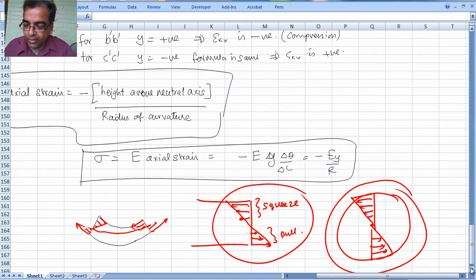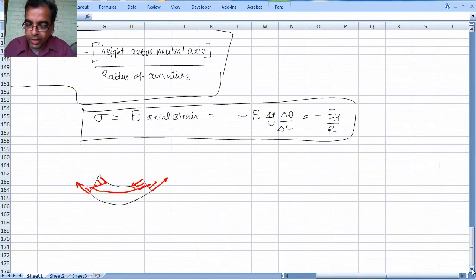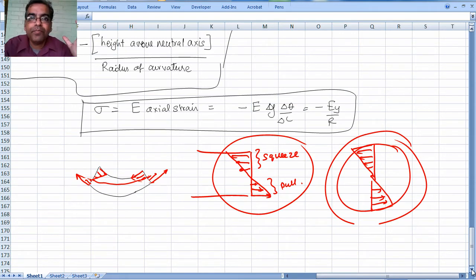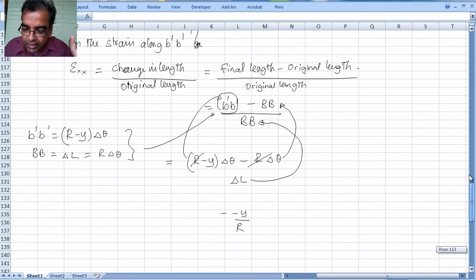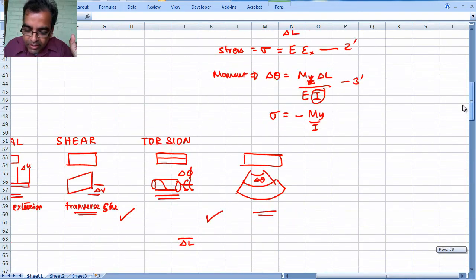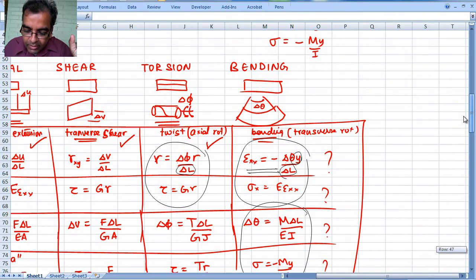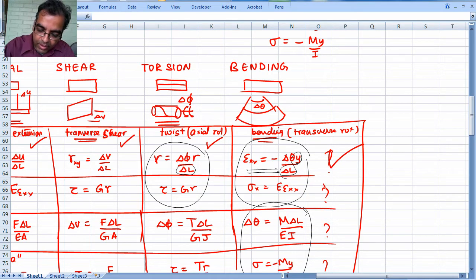Hi, welcome back to CVN 305, looking at bending. We already did the curvature related to axial strain, we figured out the axial stress. Now we want to figure out how is the moment versus stress related, that is moment versus curvature related. We want to get this thing delta theta equal to ML over EI. We have done this, we have done this, now we got to do work on these two.